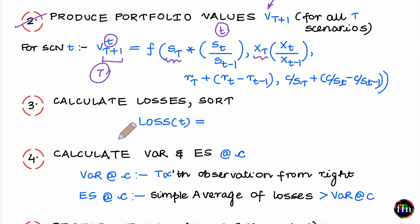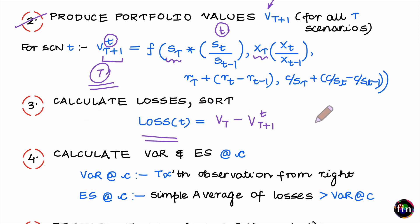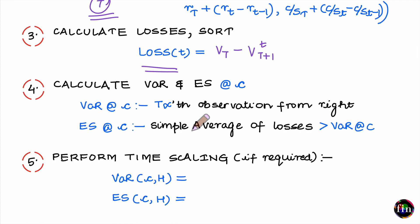In Step 3, calculate the loss for each simulated portfolio value. Loss is calculated as the initial value (at the close of capital T) minus the final value V_{T+1} corresponding to each scenario. For every future portfolio value, calculate a corresponding loss. Then sort all these losses in increasing order. In Step 4, calculate your VaR and Expected Shortfall at the chosen level of confidence.